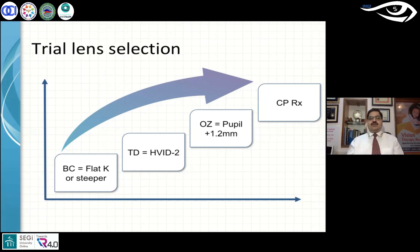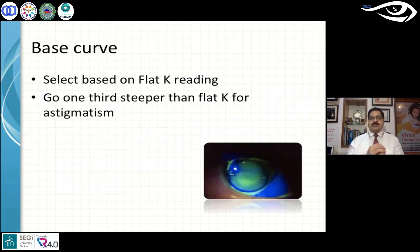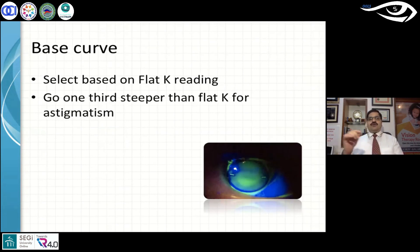Total diameter is obtained by the formula HVID minus 2mm. Remember, these are starting parameters and will change as you assess the fit on the slit lamp. Optic zone diameter can be pupil diameter plus 1.2 to 1.5mm, so the optic zone covers the pupil from all 360 degrees. Corneal plane refraction gives you the lens power. My method is to go one-third steeper than flat K for astigmatism: for 1 diopter of astigmatism, go 0.33D steeper; for 3 diopters, go 1.00D steeper. For 3D astigmatism you'd ideally want a toric RGP, but this is my rule of thumb.